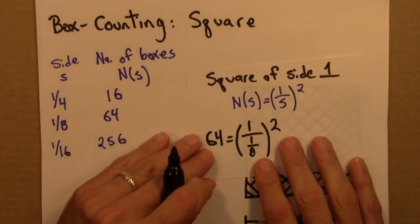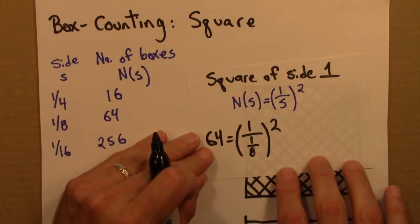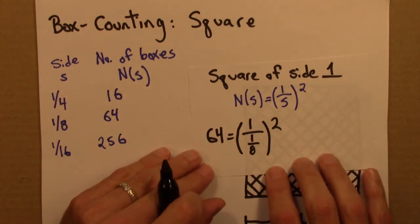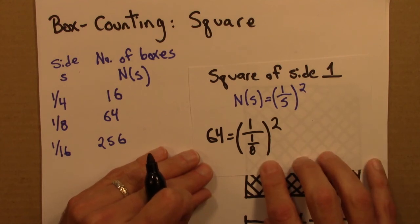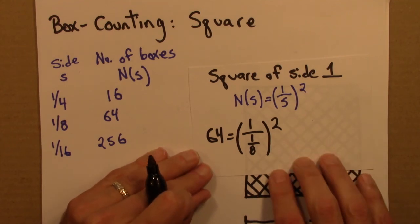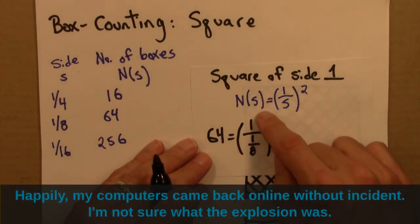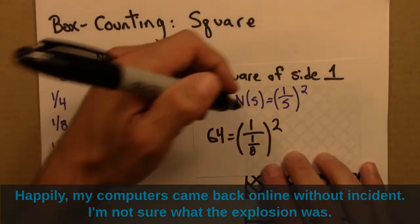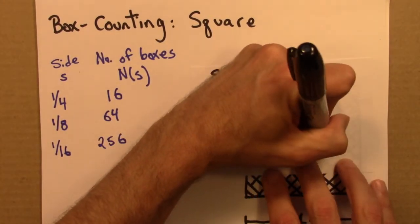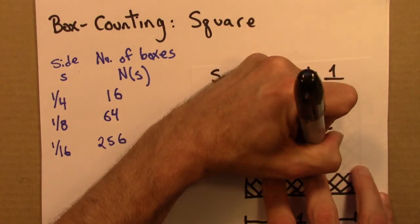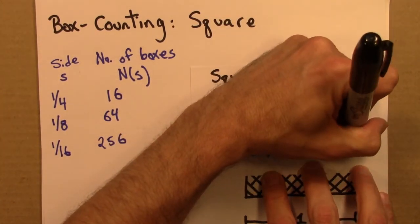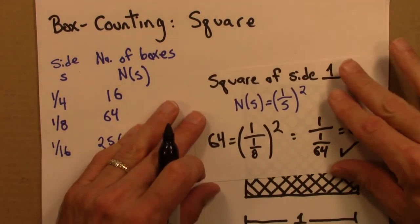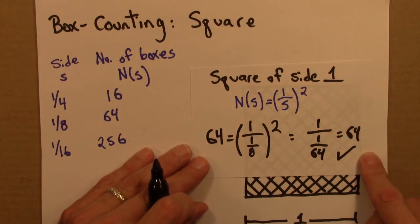The power just went out here, but I think this is still recording, because my camera has a battery. So I'm going to keep going, and hope that my computers weren't fried. So 64 is 1 over 1 over 8 squared. 8 squared is 64. This ends up looking like 1 over 1 over 64. And that is indeed 64. How many times does a 64th go into 1? The answer is 64.